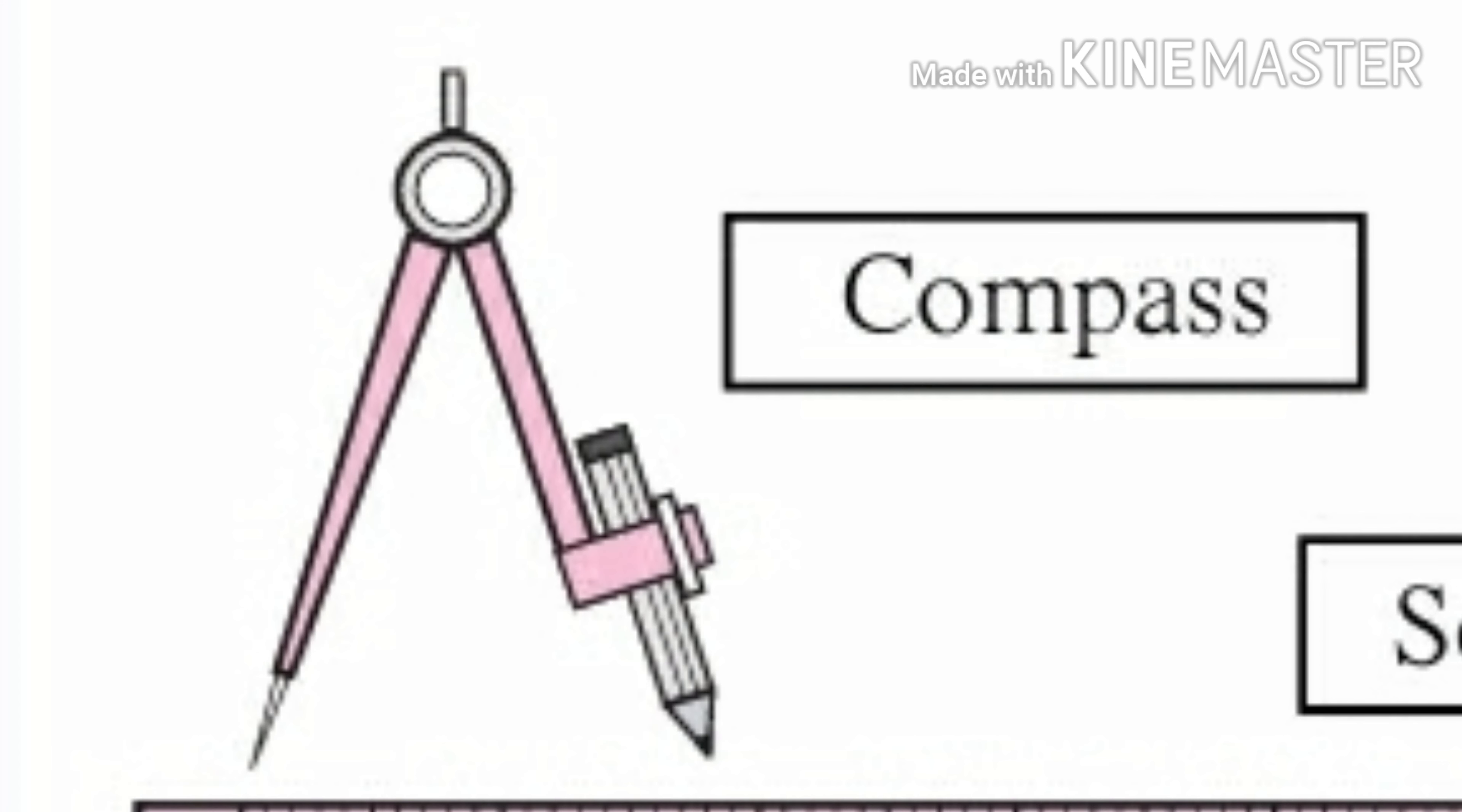Compass: Has a pointer on one end and a pencil on the other. The usage of a compass is to draw arcs and circles.